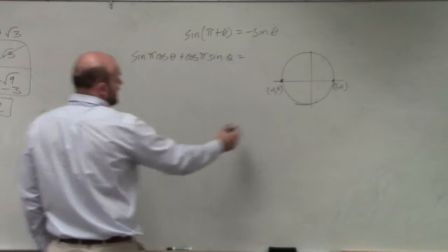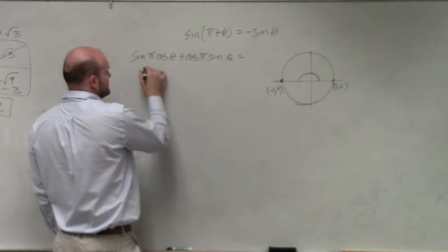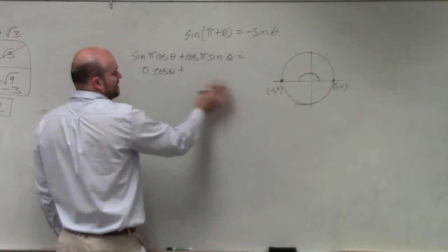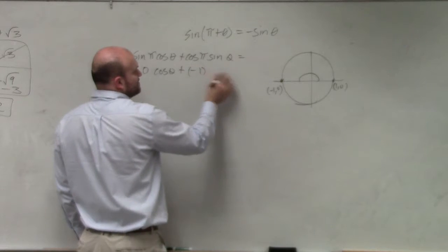So sine of pi, which is here, is the y-coordinate, which is 0, times cosine of theta. Cosine of pi, which is negative 1, times sine of theta.